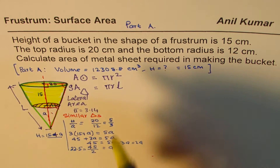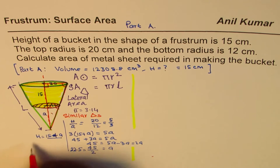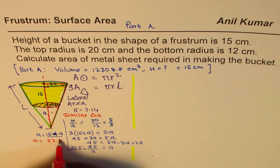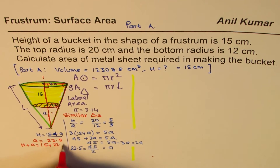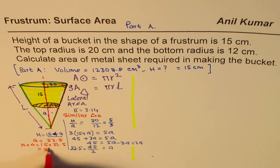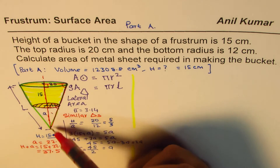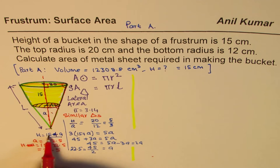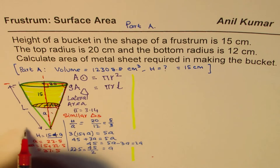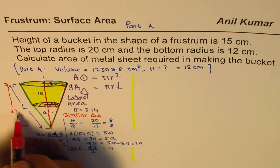So we found A = 22.5. Therefore H plus A will be 15 + 22.5 = 37.5. So capital H, the total height, is 37.5 cm.